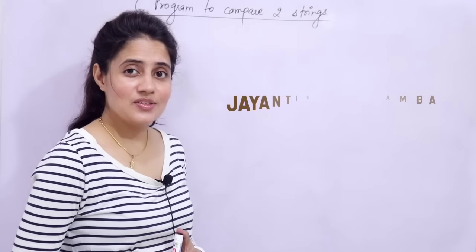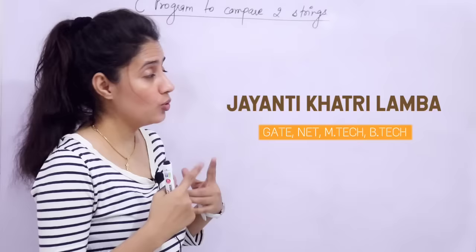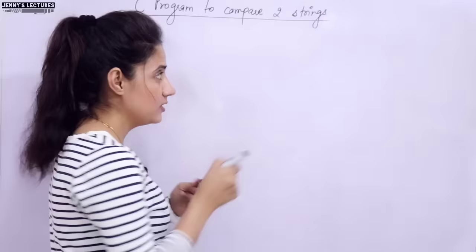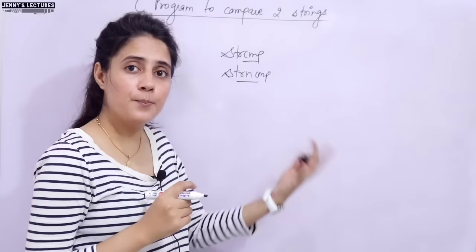In this series on learning programming in C, we are discussing strings. We have covered two to three programs on strings using predefined functions. In this video, I will talk about one more predefined function used to compare two strings — that function is strcmp, and a variant is strncmp. We will see both functions and also compare strings without using these predefined functions by writing our own logic.